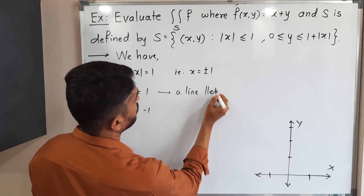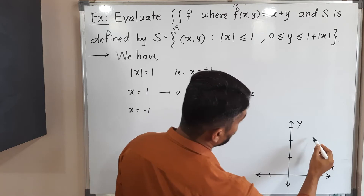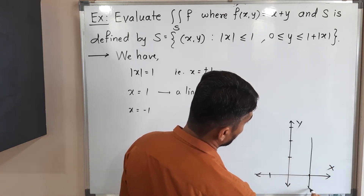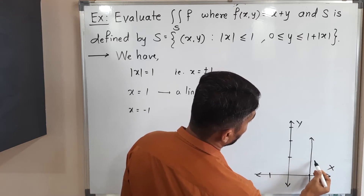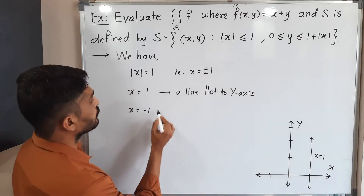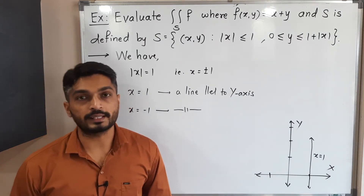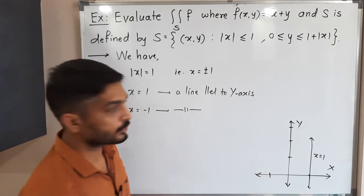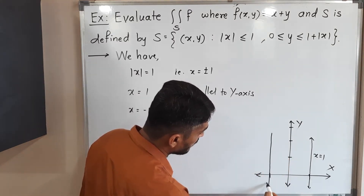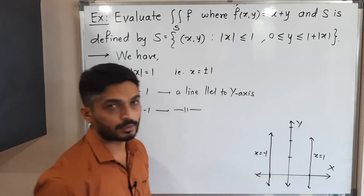X equal to 1 represents a line parallel to the Y-axis, passing through X equal to 1 — shown here. X equal to minus 1 is again a line parallel to the Y-axis but passing through X equal to minus 1, so that line is here.